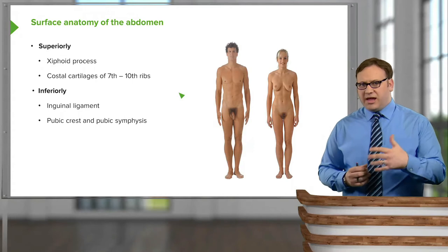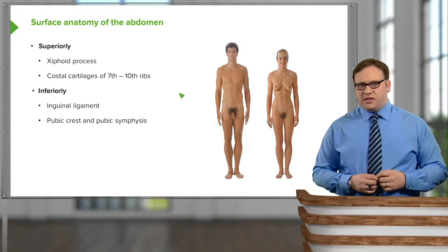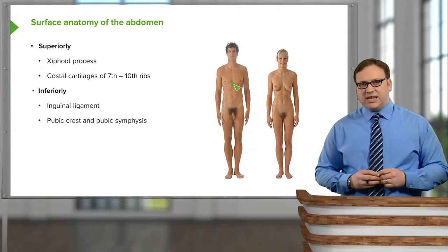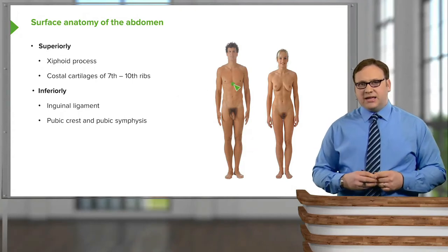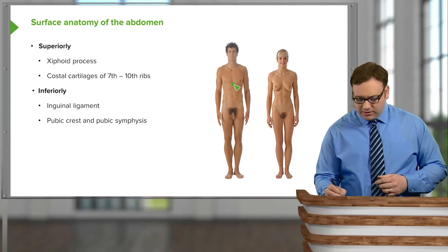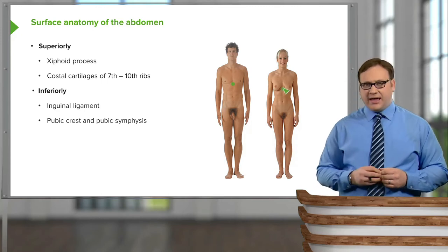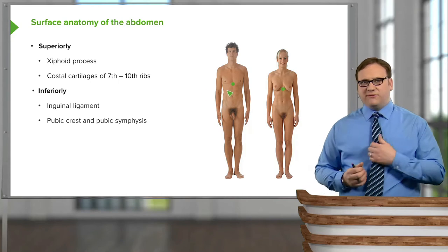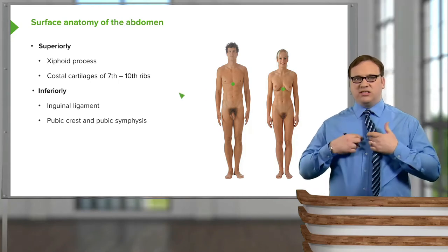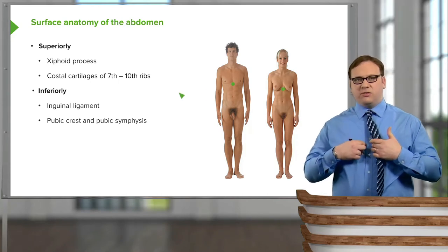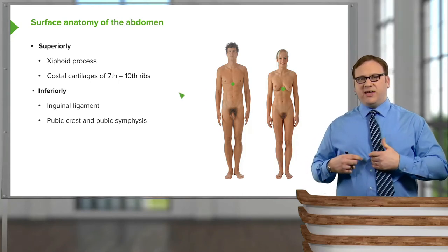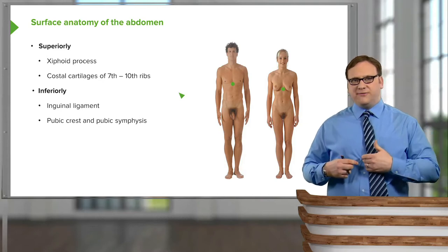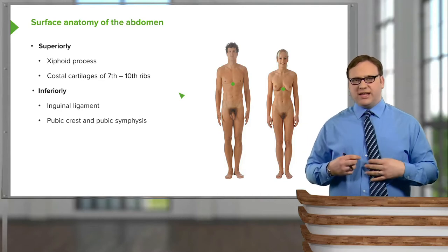We can start off superiorly with the xiphoid process, which in the male we can see here, and in the female about here. We can feel this landmark on ourselves — feel your sternum and thoracic cavity and go inferiorly. Where it stops, that point is your xiphoid process.